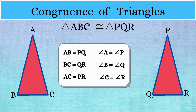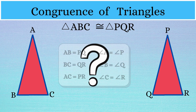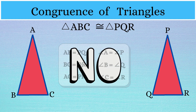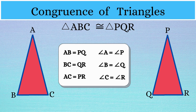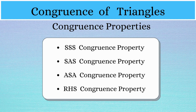Now the question is: do we need to check if all six conditions are satisfied to make sure the two triangles are congruent? And the answer is no. Only three conditions would be enough, but these conditions should be properly chosen. Based on the conditions chosen, we have four different types of congruence properties.